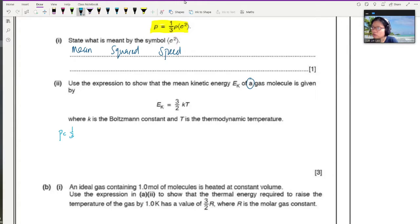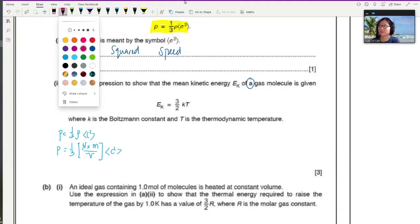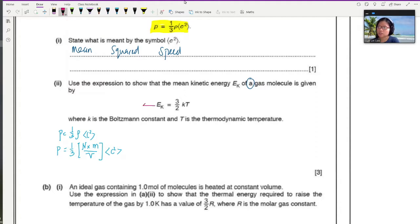p is equal to 1 over 3 ρ c squared, and this ρ is density. So I will put p equals 1 over 3, density would be the number of particles multiplied by the mass of one particle divided by the volume of your sample. So N times m, number of particles times mass of one particle, is the mass of the sample divided by the volume of the sample, and here we have c squared.